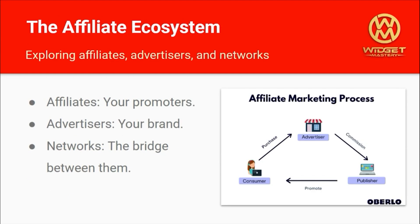Affiliate marketing involves three main players: affiliates, advertisers — that's you — and affiliate networks. It's crucial to understand this ecosystem. Your affiliates are your promoters, advertisers are your brand, and networks serve as the bridge connecting the two. Think of it as a collaborative triangle where each party plays a vital role in driving success.